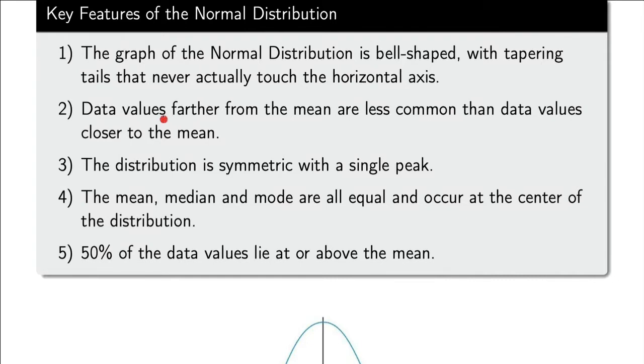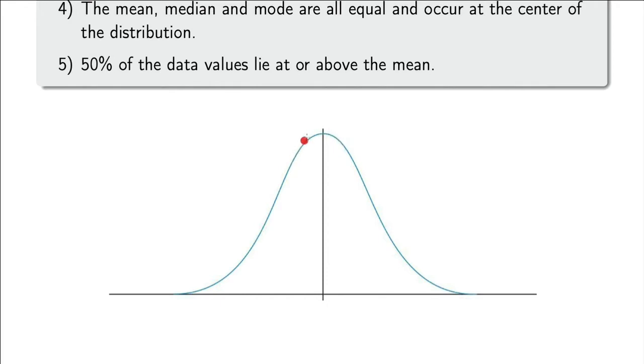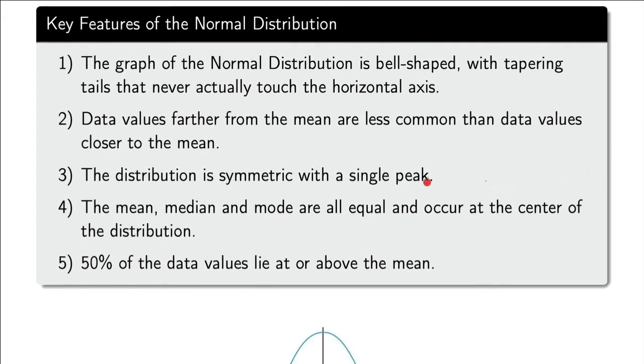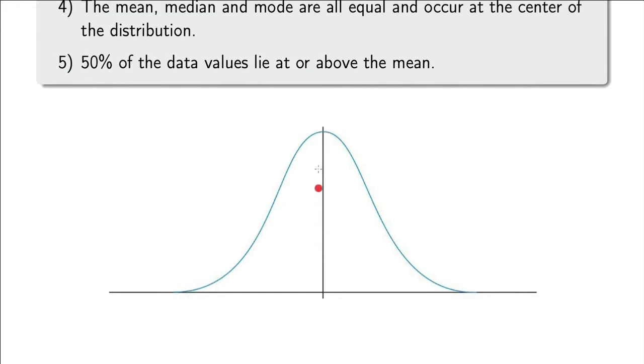Next is just kind of interpretations about that curve. Data values further from the mean are less common than data values closer to the mean. The mean is actually where the peak is, and since it's a high value on this curve, high values here indicate how frequently we see those values in the population. As we move away from the mean it's less common. We've got symmetry with the single peak, and then it turns out that the mean, median, and mode are all the same thing and they occur at the peak of the distribution. Because of symmetry, on the left of the mean, which is our vertical axis right here, we have 50% of the data and on the right we have 50%. That means that the total area under the curve being 100%, 50% is to the left of the mean and 50% is to the right of the mean.